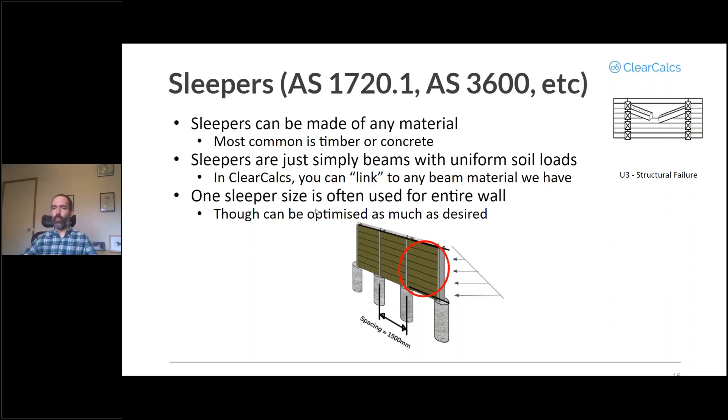Most commonly, you're going to end up using one sleeper size for the entire height of the retaining wall. However, technically, you can actually optimize that as much as you would like. You may recall we talked about those triangular distributed loads where the soil actually imparts upon the retaining wall. That triangle is at its largest at the bottom of the retaining wall.